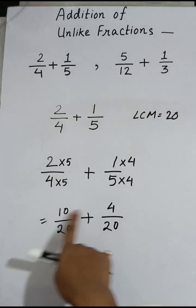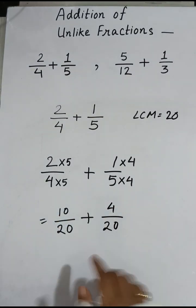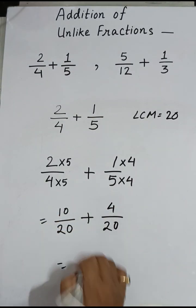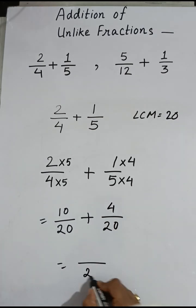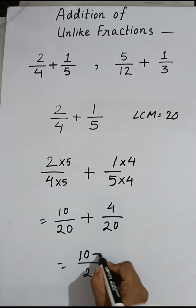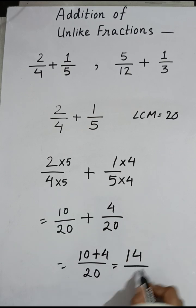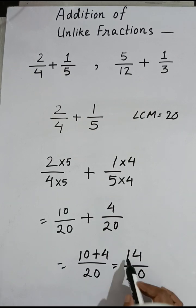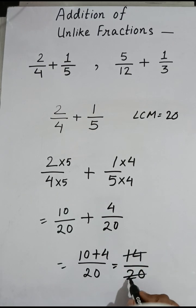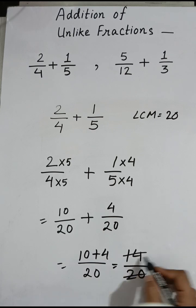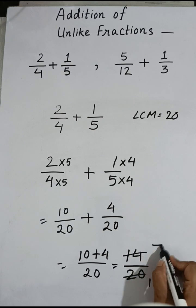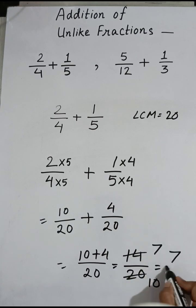Since the denominators are the same, we simply add the numerators. That equals 10 + 4 over 20, which is 14/20. Now we can simplify: 14 divided by 2 is 7, and 20 divided by 2 is 10. So the final answer is 7/10.